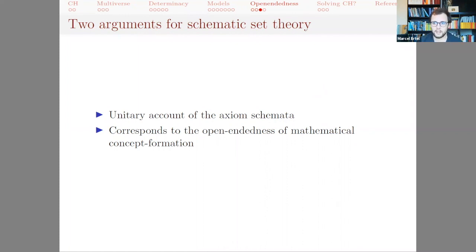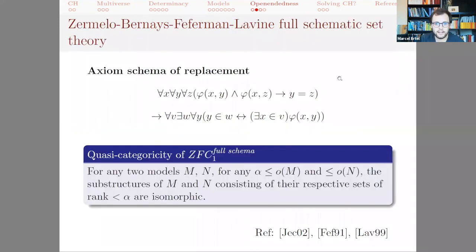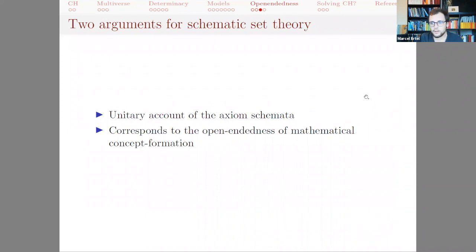That has two main advantages. The first one is that we get a kind of unitary account of the axiom schemata. What is it actually that makes us accept these axioms? Insofar as we accept them, presumably it is not a case-by-case acceptance, but it is the fact that we see that the axiom schema of replacement makes sense, and it doesn't really matter what formula we substitute here. It's just the idea that if we have a function, then the range of a function applied to a set is itself a set, and how that function is defined, that is completely arbitrary. It's not relevant whether we do this in the language of set theory or in some other language expansion. The second point is that it corresponds to what Bernays has emphasized a lot, the open-endedness of mathematical concept formation.